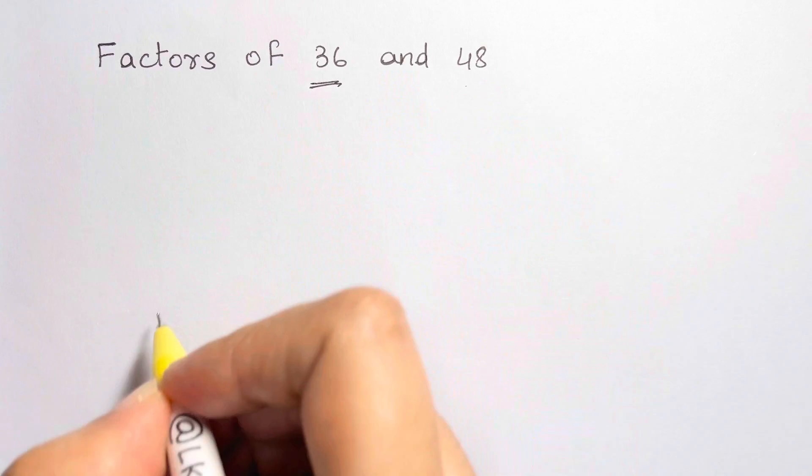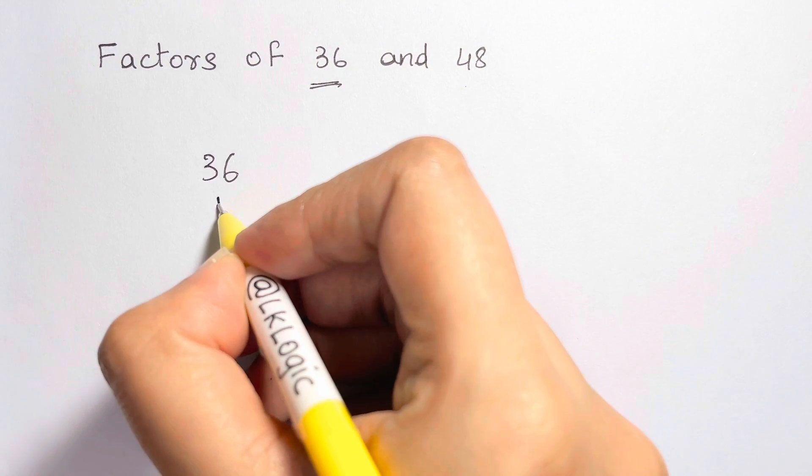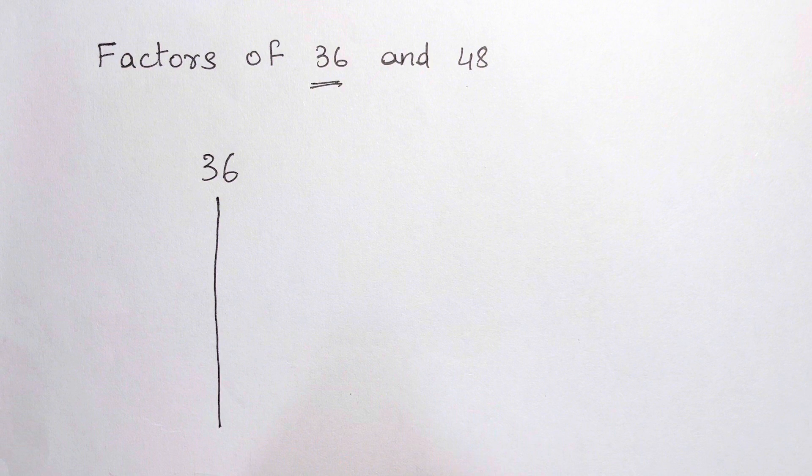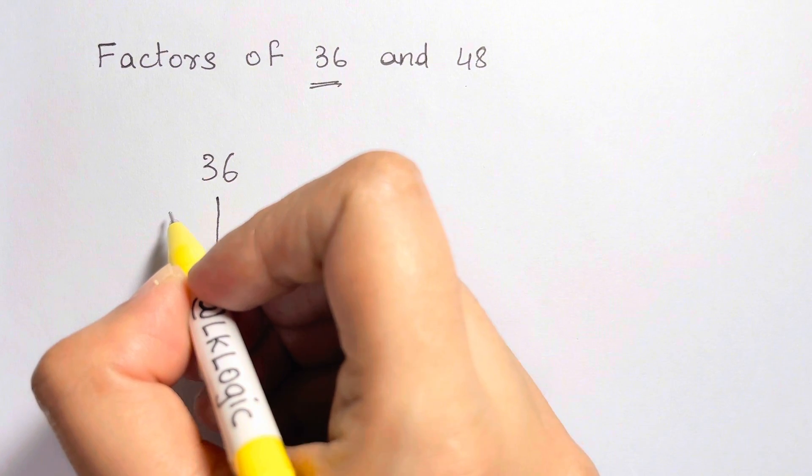So first, let me take the number 36. I draw a line in between the number, a straight line, and then I start with the smallest number, 1.